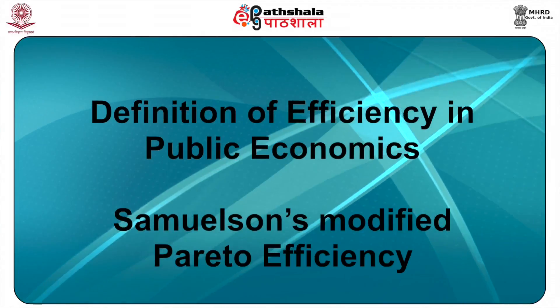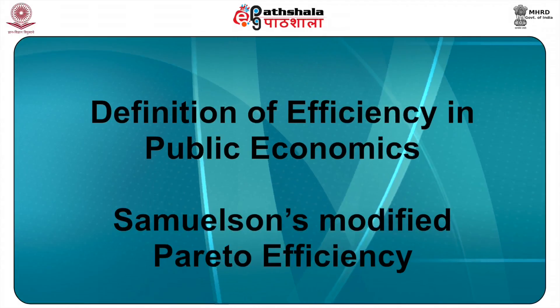Moving on to the definitions of efficiency in public economics — Samuelson's modified Pareto efficiency criteria. Samuelson's general equilibrium model is based on two goods, a public and a private good, and two people, Mr. A and Mr. B. His analysis assumes two goods in the economy: private good P and social good S. The production possibility curve for two goods P and S is given. The PPC, also called the transformation function or production frontier, shows the possibilities open for increasing the output of one good by reducing the output of the other.